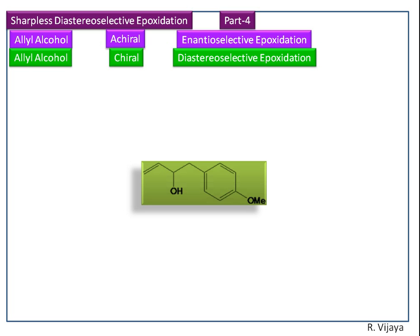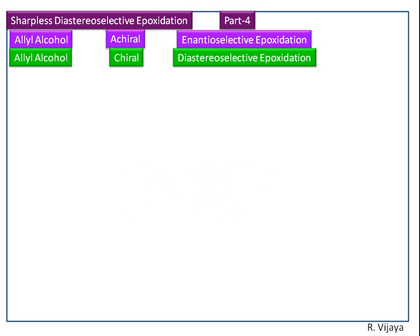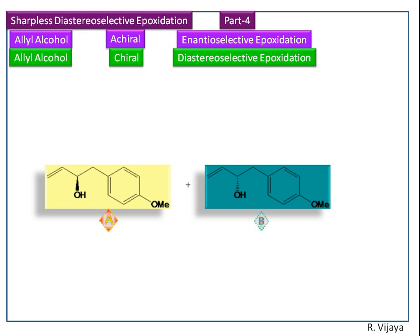This reactant molecule has a primary chiral allylic alcohol. So it will have a racemic mixture of enantiomers A and B. The A-enantiomer has R configuration and the B-enantiomer has S configuration.